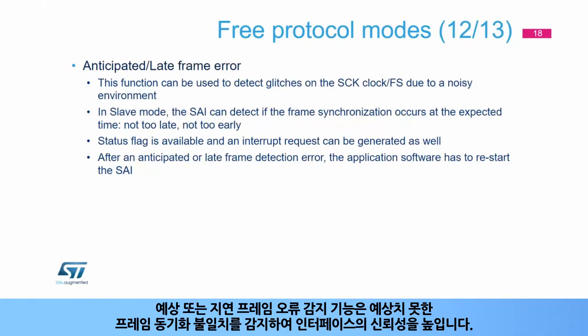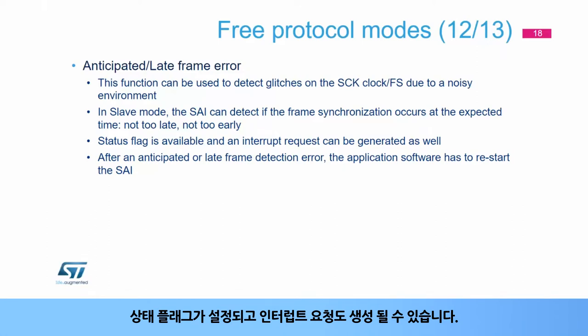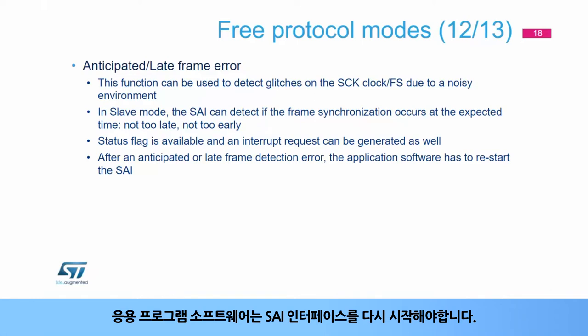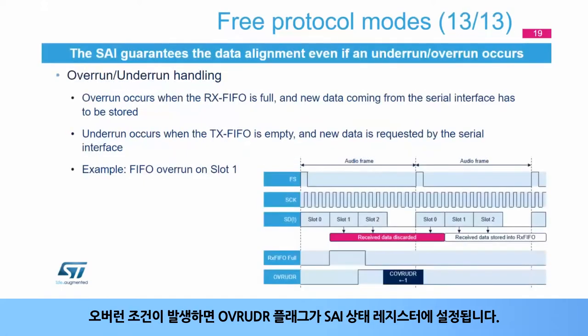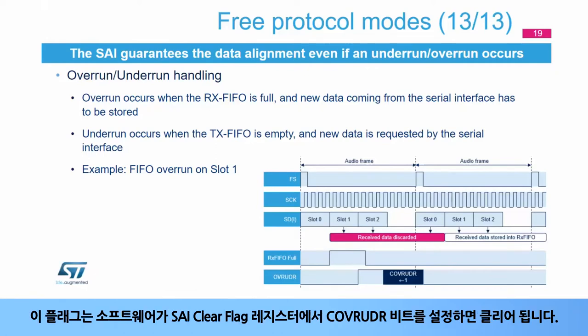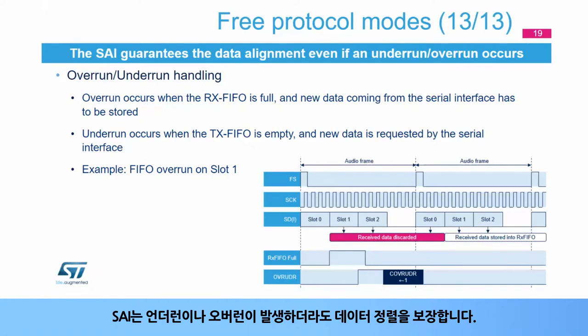The anticipated or late frame error detection function increases the interface's reliability by detecting unexpected frame synchronization misalignment. A status flag is set, and an interrupt request can be generated as well. The application software will have to restart the SAI interface. When an overrun condition occurs, the OVR_UDR flag is set in the SAI status register. This flag is cleared when the software sets the COVR_UDR bit in the SAI clear flag register. The SAI guarantees data alignment even if an underrun or an overrun occurs.